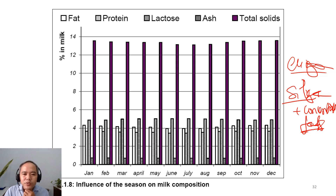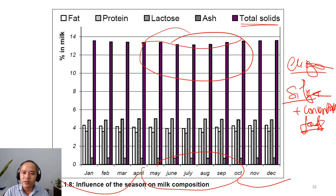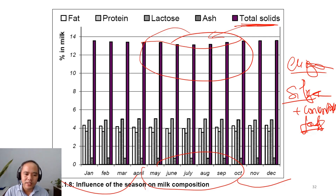Looking at the data, the summer months show that when cows eat more fresh grass, which has more water, the milk is somewhat more diluted. The total solids during the summer months are a bit lower compared to other months. We can also see the composition of lactose, fat, proteins, and minerals — they all vary somewhat throughout the months of the year.